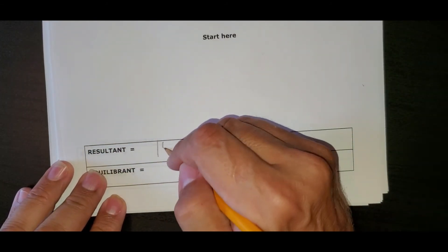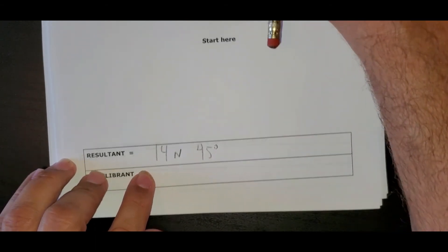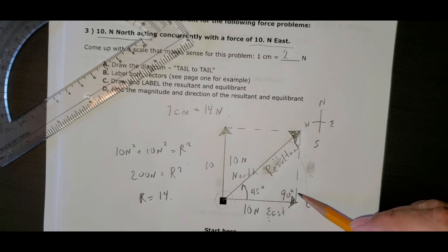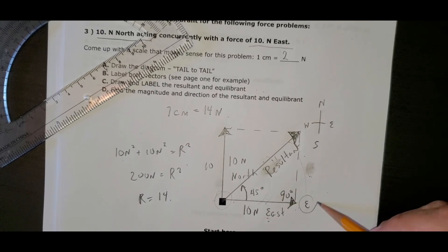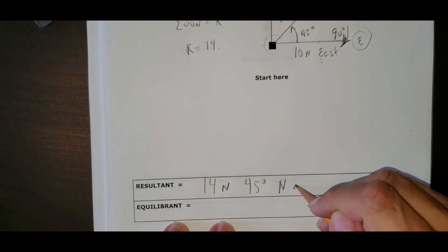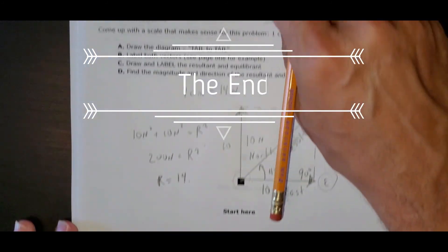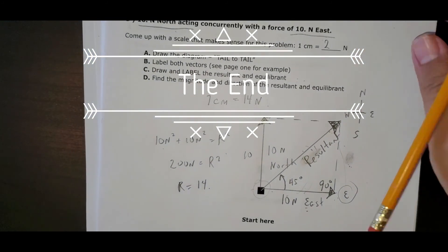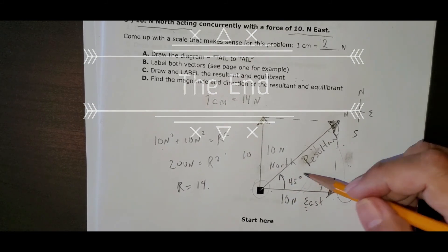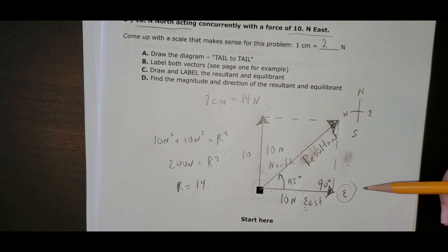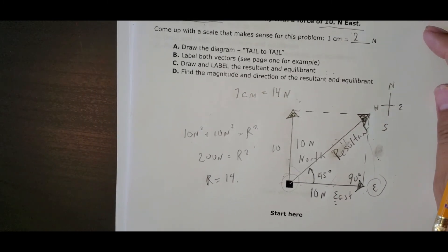My result is 14 newtons, 45 degrees. It's north, up north of east. So 45 degrees north of east. And that is how you find and draw resultants when your forces are tail to tail and 90 degrees. These two forces, of course, north is 90 degrees from east.